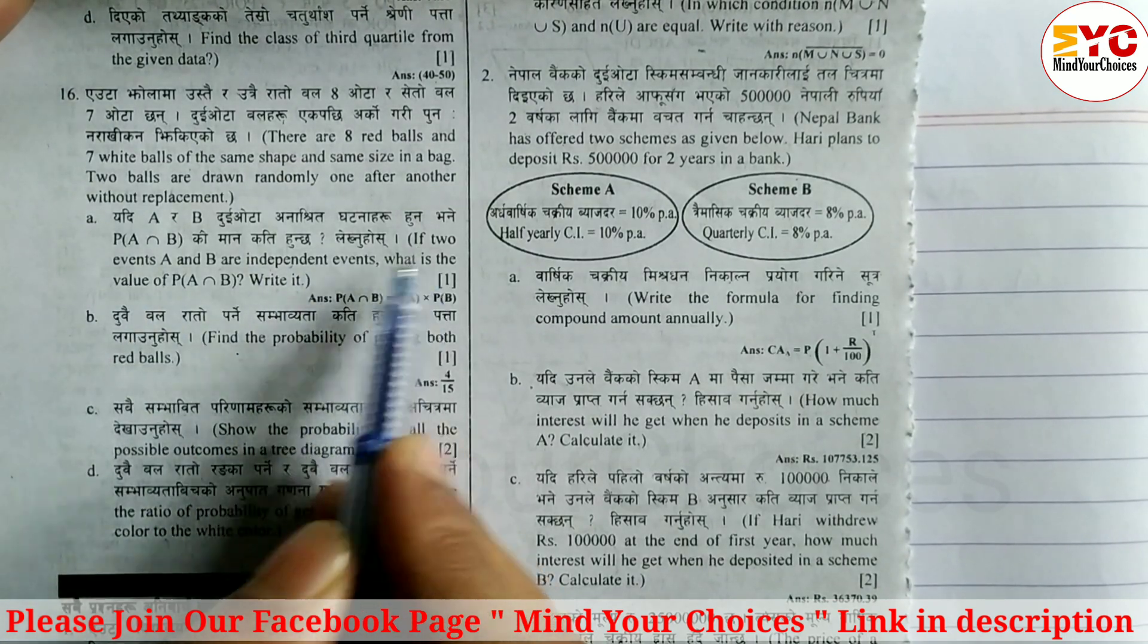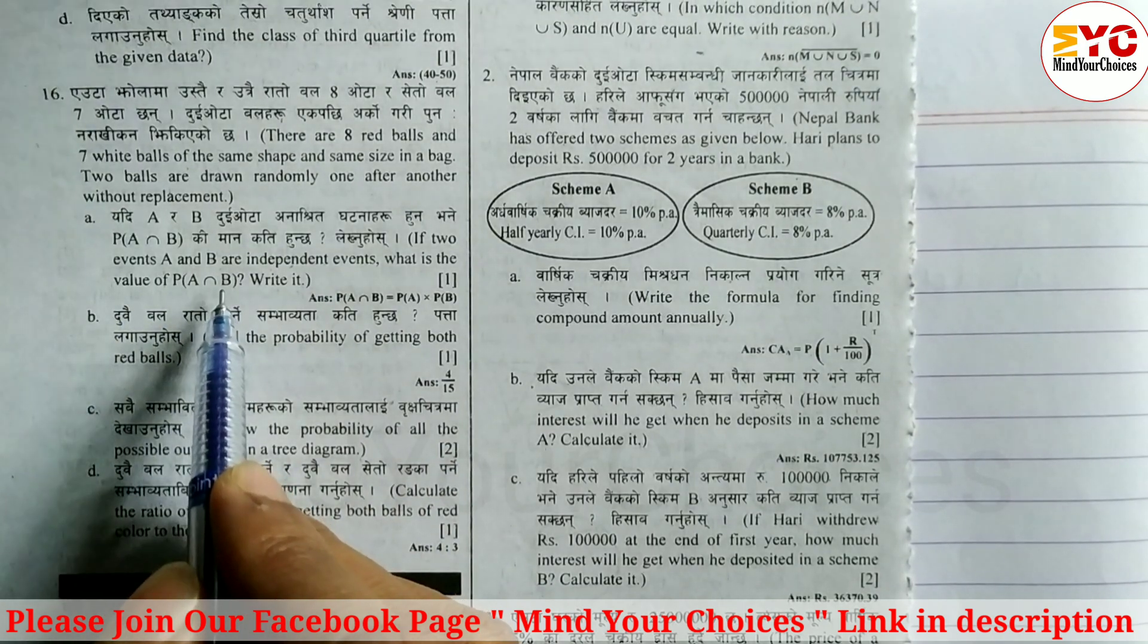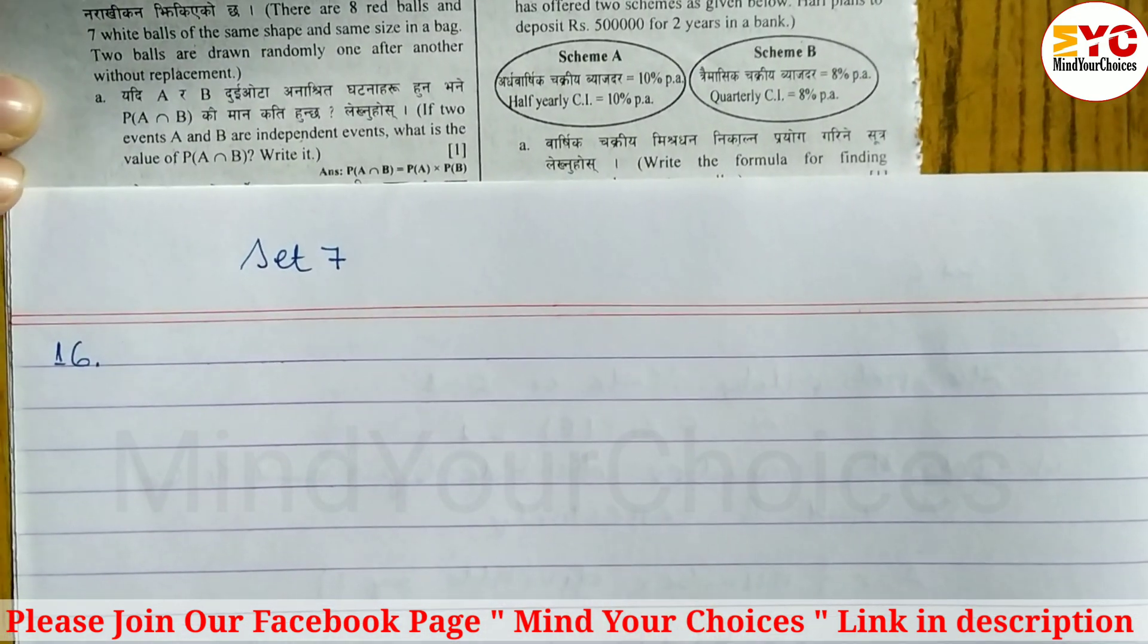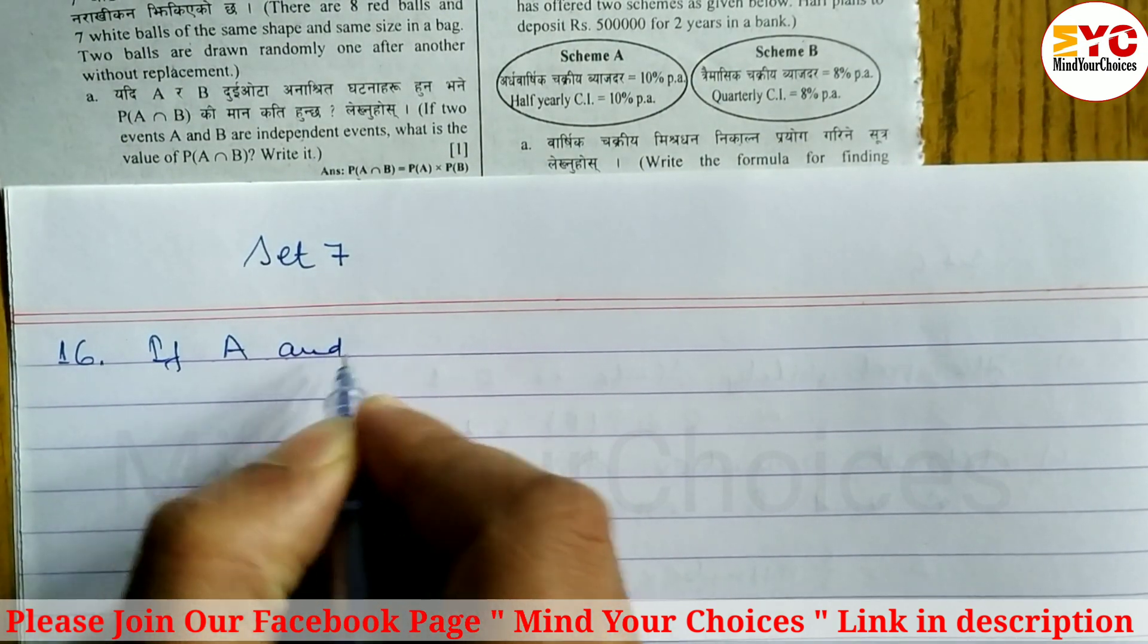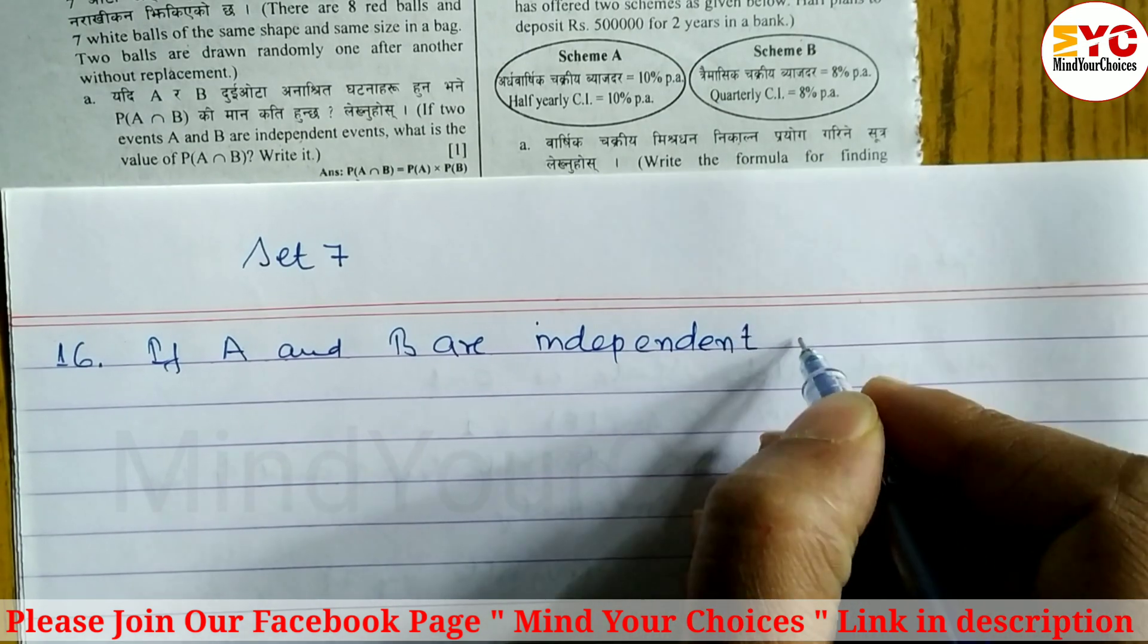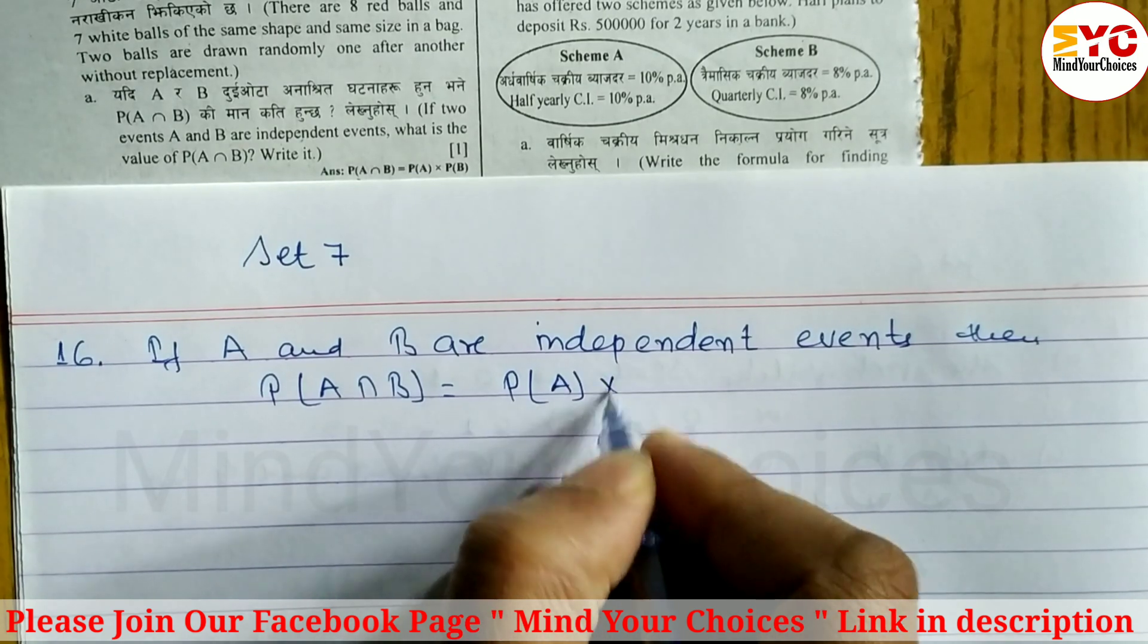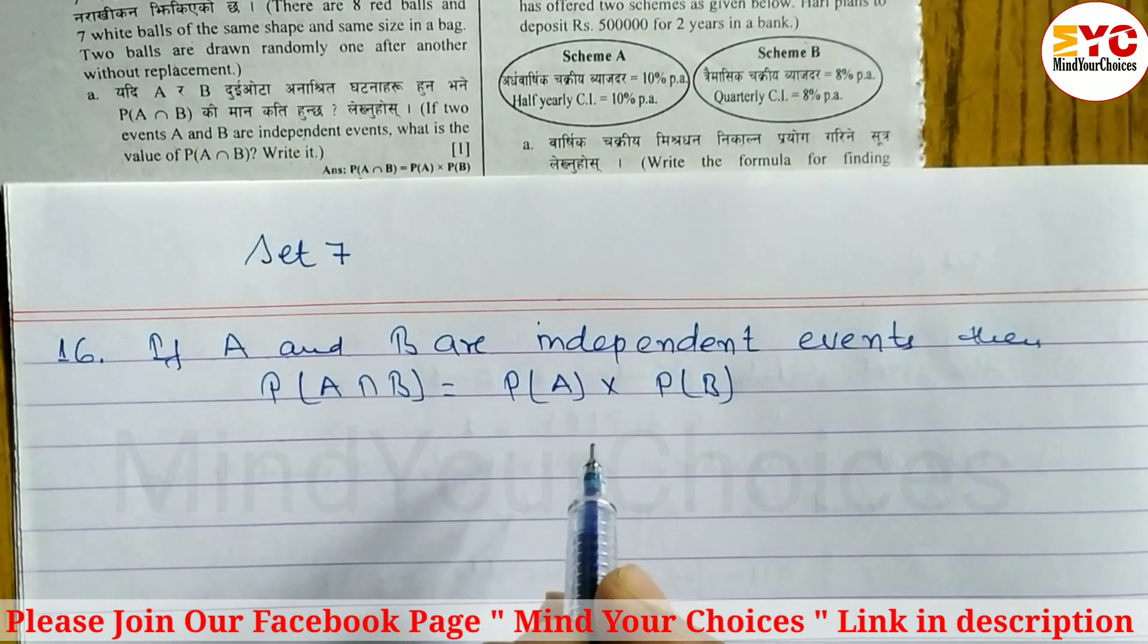Question number A: If two events A and B are independent events, what is the value of P(A intersection B)? Let's do step by step. First of all, we have to write if A and B are independent events, then the value of P(A intersection B) is equal to P(A) into P(B). After that, you can write down the formula of P(A) or P(B), or you can leave up to here.